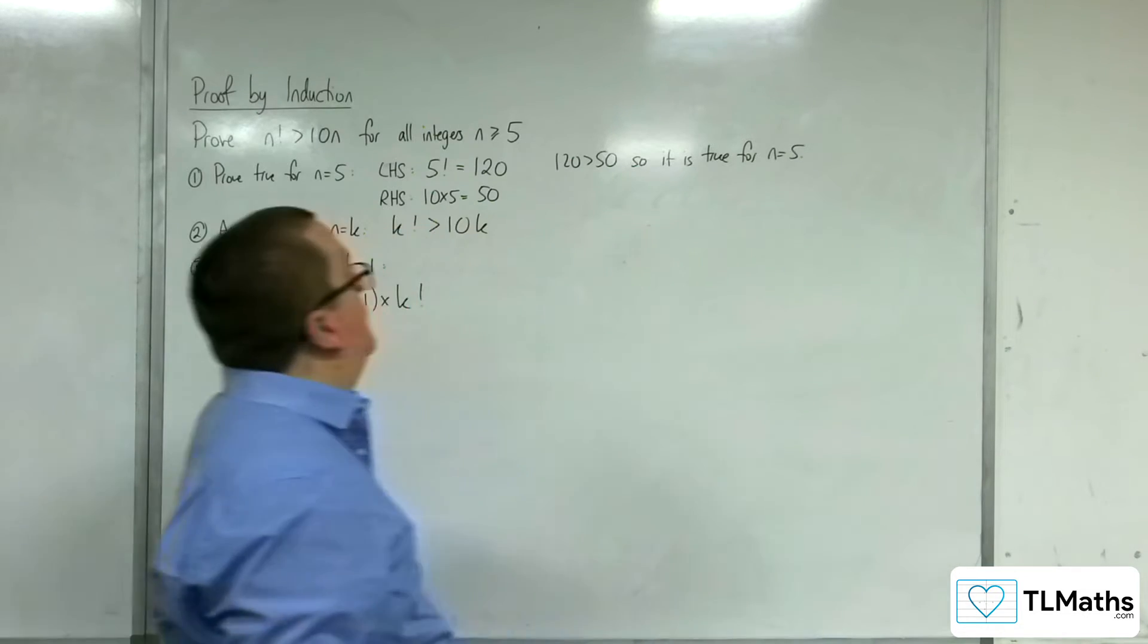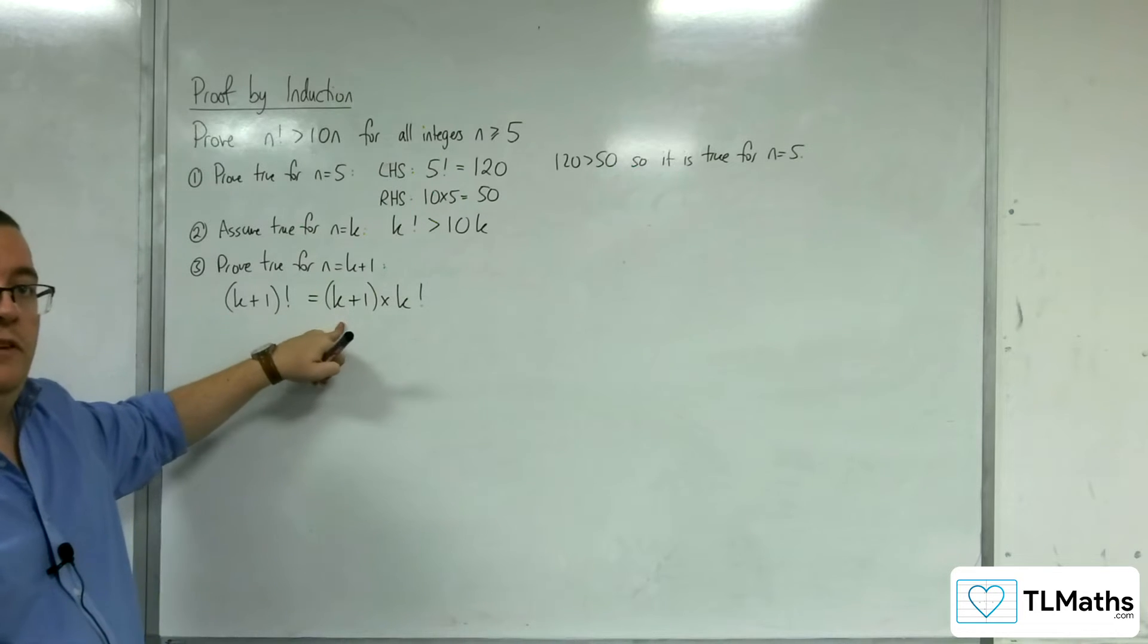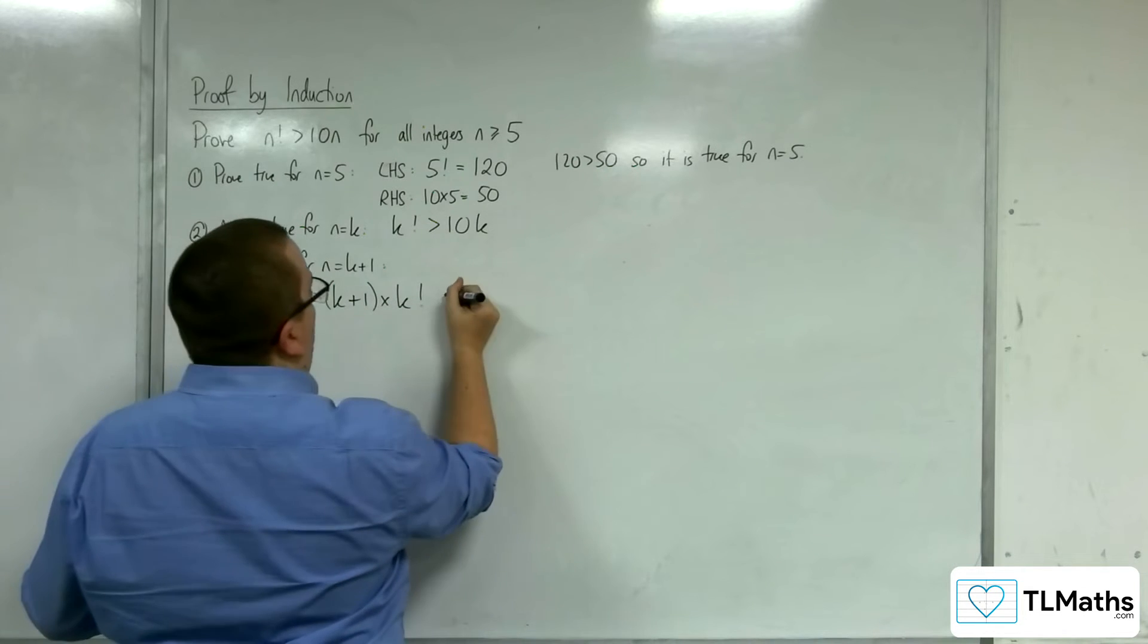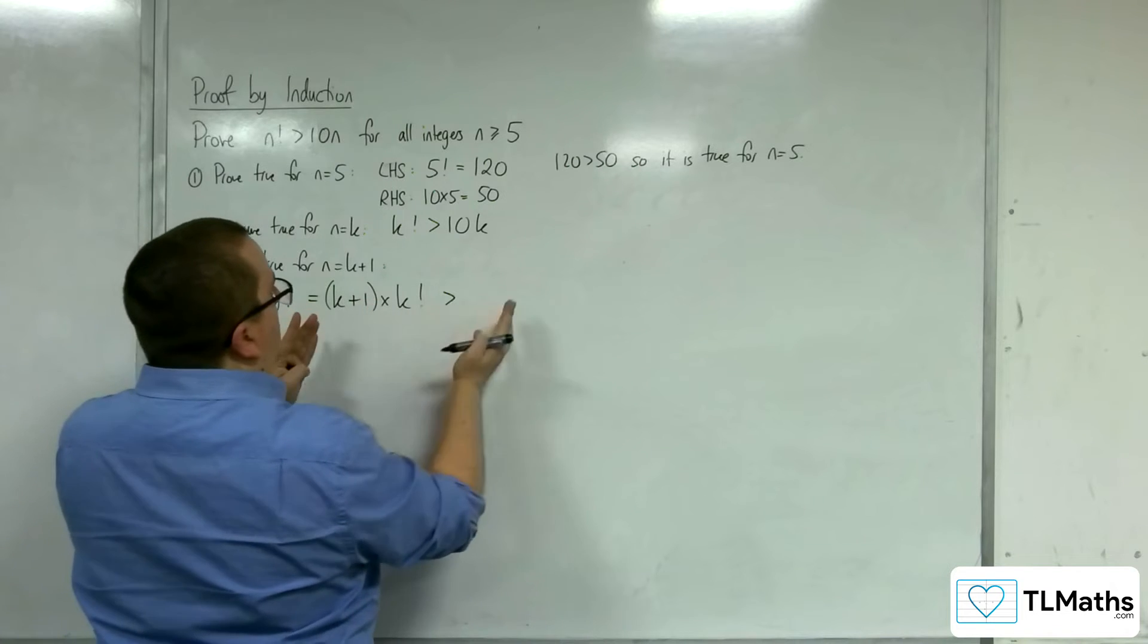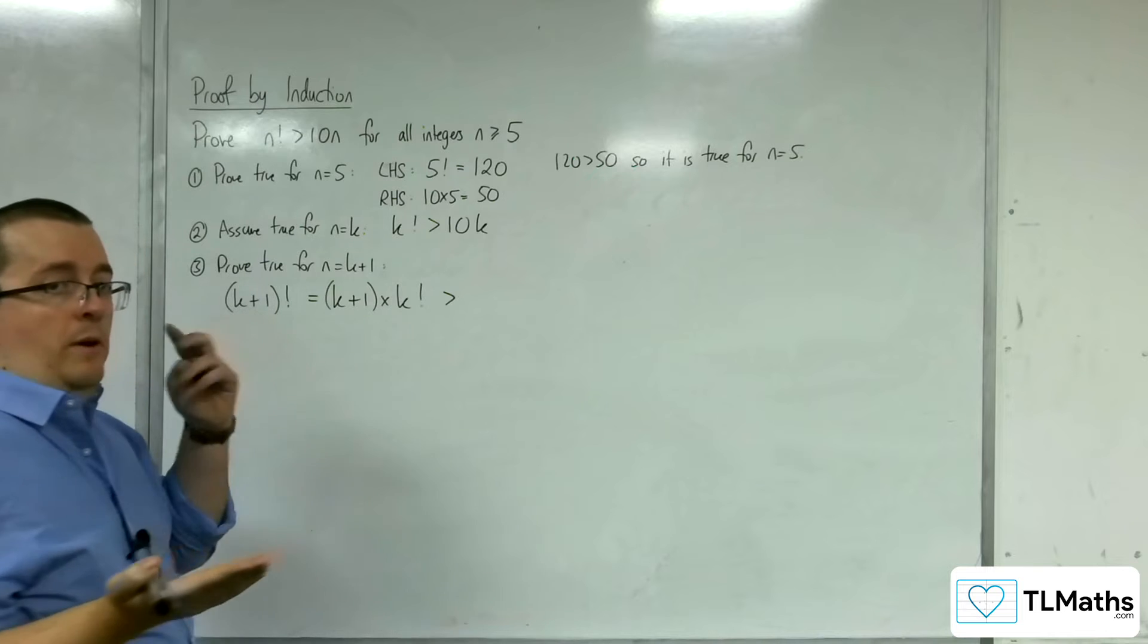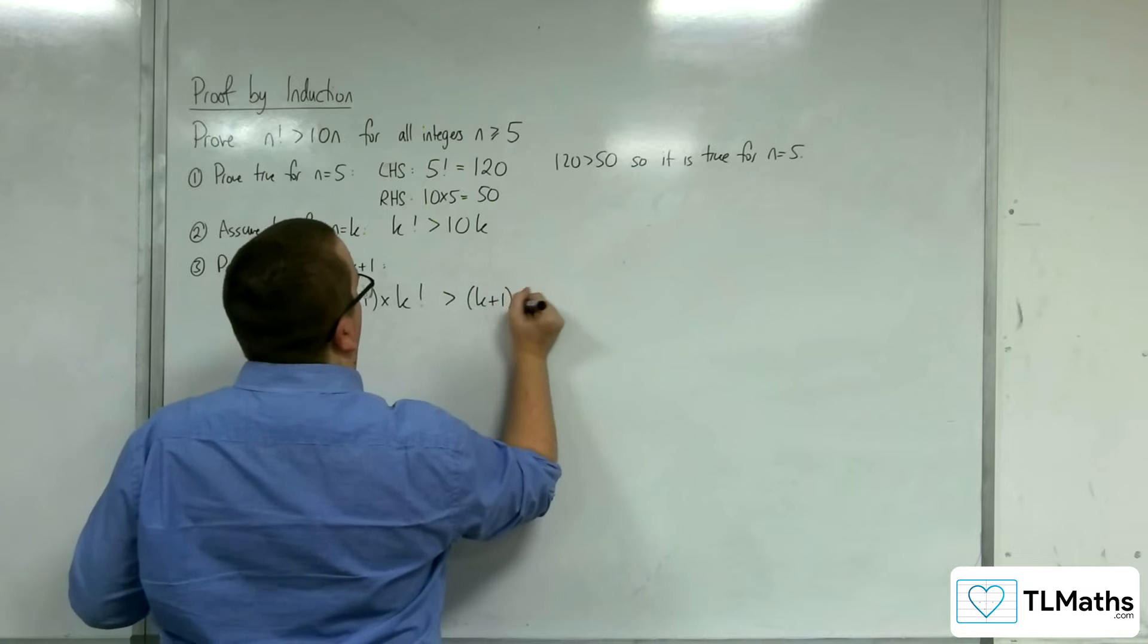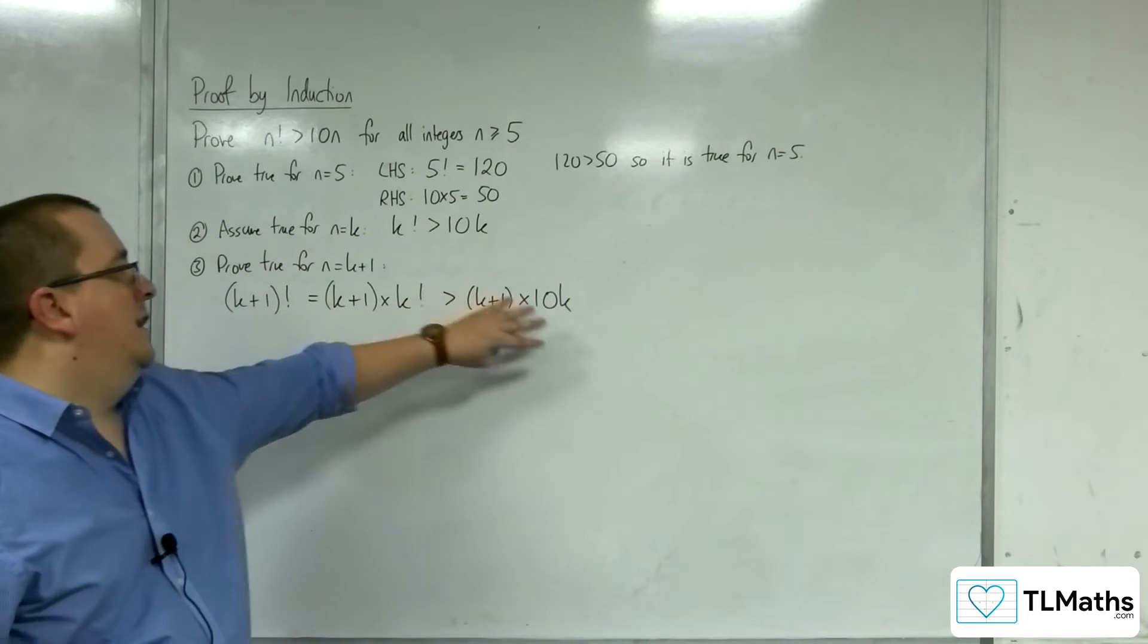k plus 1, if k is going to be greater than 5, then k plus 1 is going to be a positive integer. So, I'm multiplying k factorial by positive integer, which makes it bigger. So, actually, this is going to be greater than k plus 1 times 10k. It's just like multiplying both sides of the inequalities by a positive constant. So, it makes sense that that is larger than that.